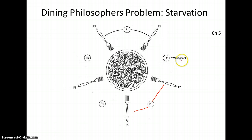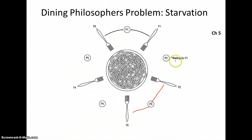The idea is that the process never completes because it's unable to get the resources it needs. By understanding starvation, the operating system can either prevent it from happening or detect when a process becomes languishing. Those are the key topics from Chapter 5: deadlocks and starvation. In Chapter 6, which will be next week, we'll look at the use of semaphores — how multiple processors can handle dealing with resources.